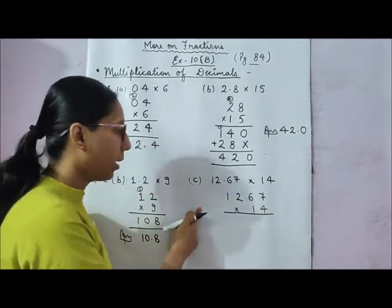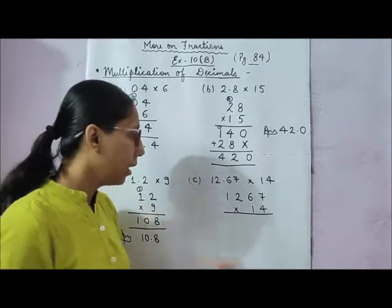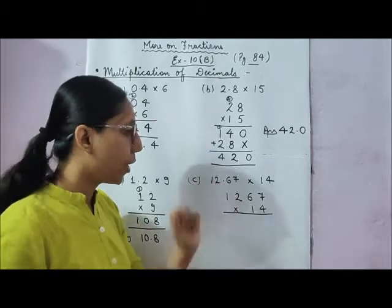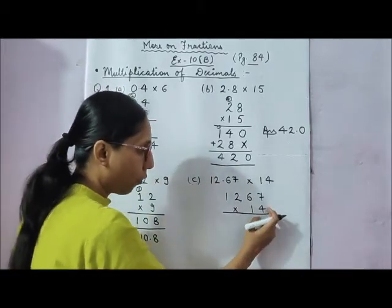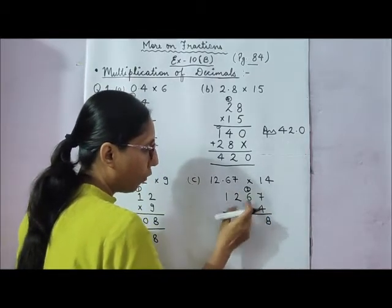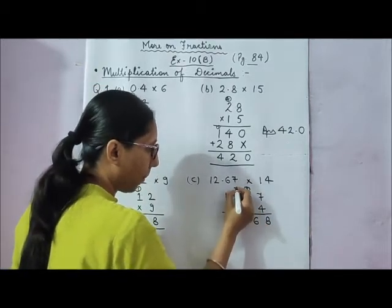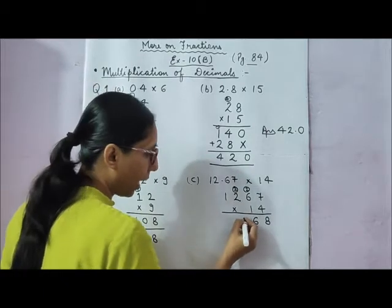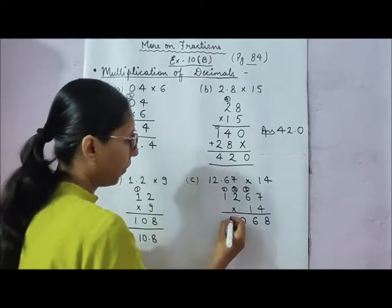Similarly, part c is 12.67 multiplied by 14. We take it as a whole number — 1267 — removing the decimal point. Now multiply by 4: 4 times 7 is 28 — write 8, carry 2. 4 times 6 is 24, plus 2 is 26 — write 6, carry 2. 4 times 2 is 8, plus 2 is 10 — write 0, carry 1. 4 times 1 is 4, plus 1 is 5.